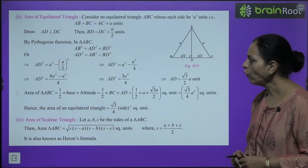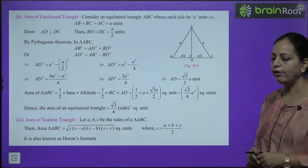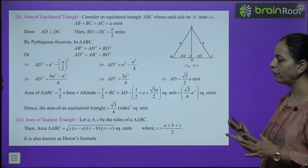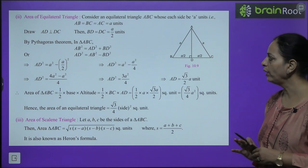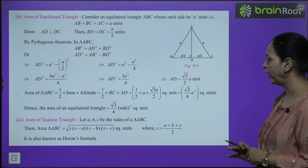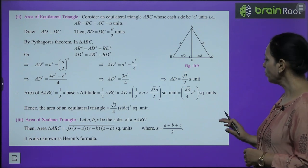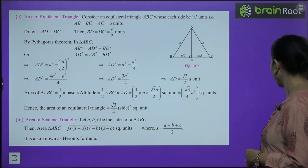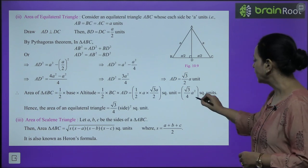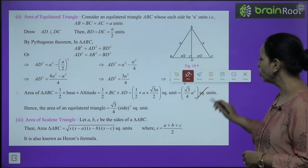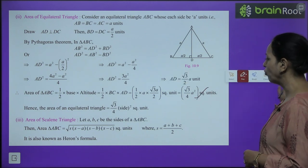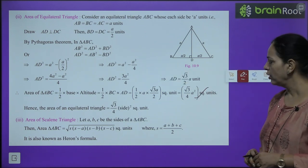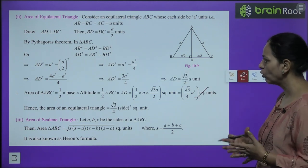Area of an equilateral triangle: when all three sides are equal (side = a), the formula is area = (√3/4) × a². Let's see how this is derived.